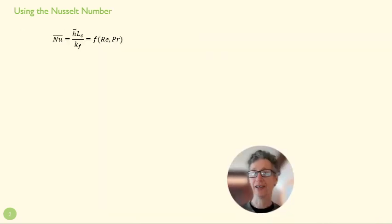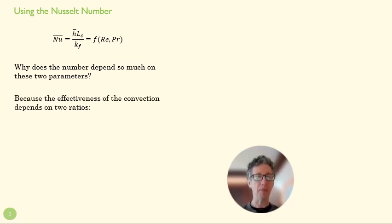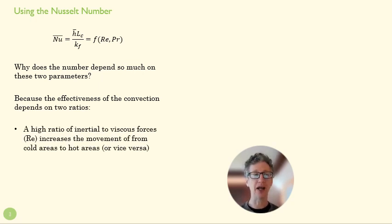So why is the Nusselt number just a function of these two parameters? Why do they depend so much on the Reynolds number and the Prandtl number? It's because the effectiveness of convection depends on two particular ratios.